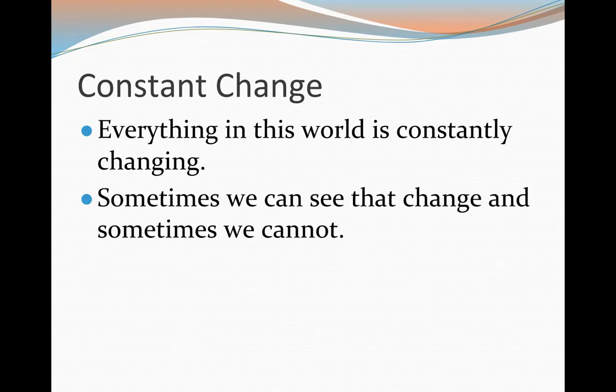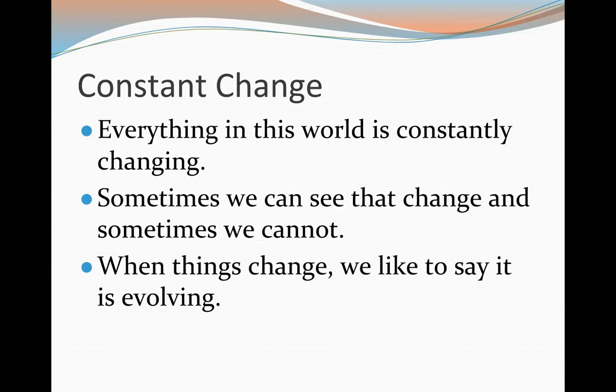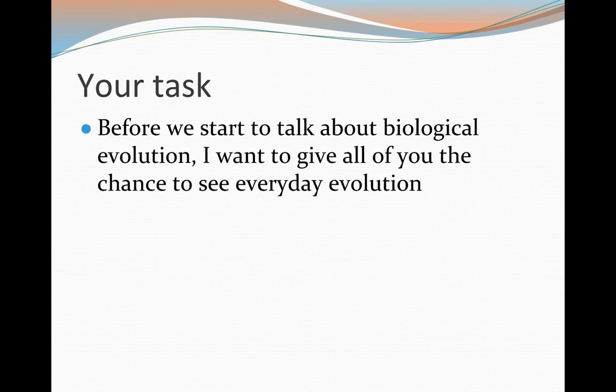Sometimes we can see that change, other times we can't. Talking about the things we can't see is the evolution of species — that's the stuff we can't see because it's going on so slowly around us. Things change like we've been talking about, and we'd like to say it's evolving.